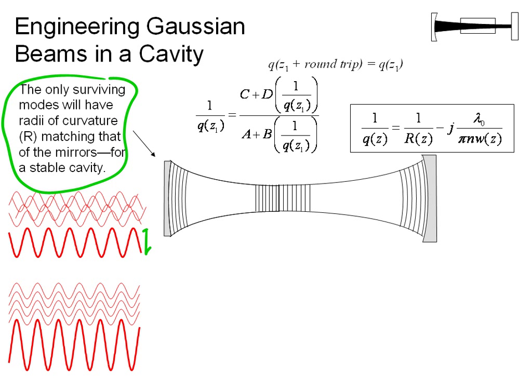And we know that after making one round trip, the Q parameter has to be the same because the Q parameter essentially gives us the phase of the Gaussian beam.